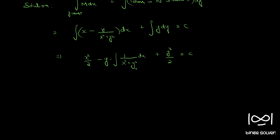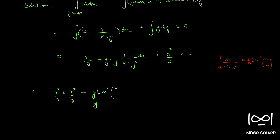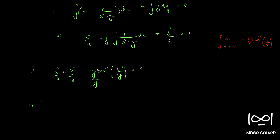Since y is a constant, we use the standard integral: integral of dx divided by (a squared plus x squared) equals (1/a) tan inverse (x/a). Here a is y, so (1/a) becomes (1/y) and the y's cancel, giving tan inverse (x/y). So: x squared over 2 plus y squared over 2 minus tan inverse (x/y) equals c. Multiplying throughout by 2: x squared plus y squared minus 2 tan inverse (x/y) equals c dash, where c dash equals 2c. This is the solution.